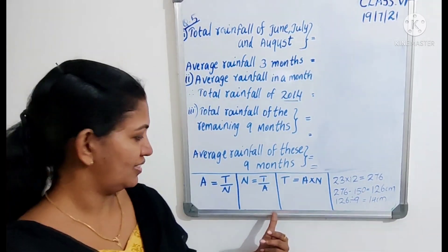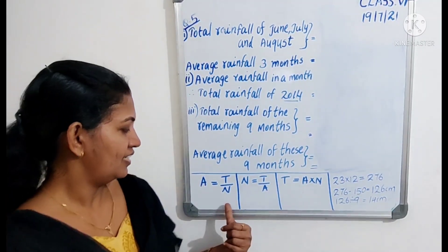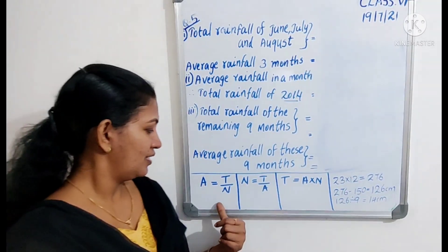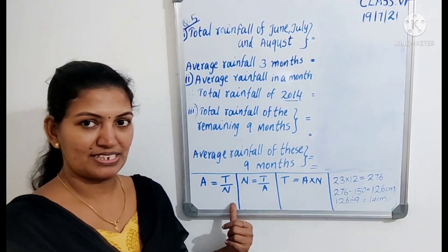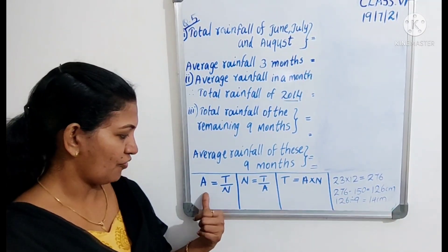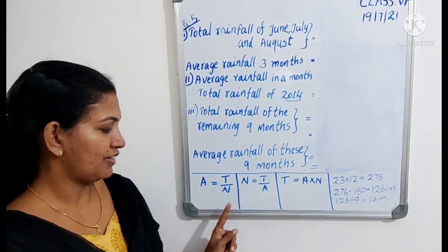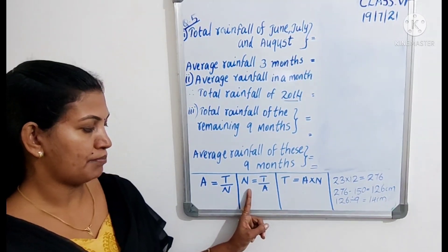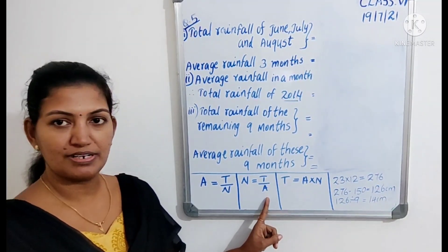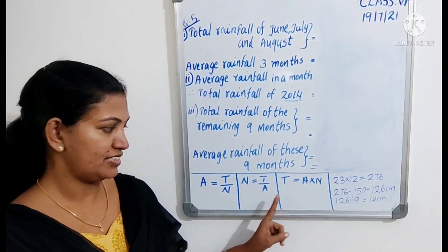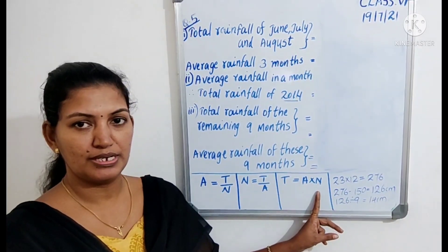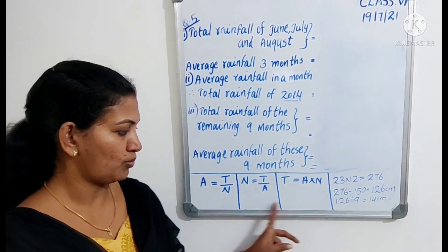Do any of you remember these formulas? These are very important formulas, that is why I am explaining once again. Average is equal to total divided by number. Number is equal to total divided by average. Total is equal to average multiplied by number. These formulas we are using for this weight problem.